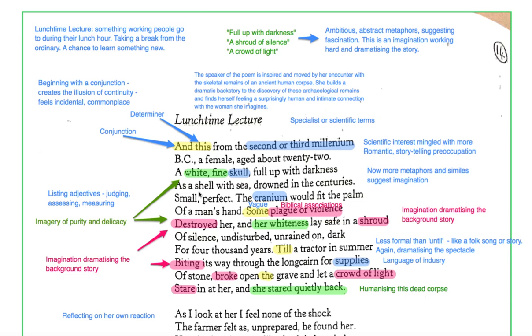Small, perfect, just the kind of those listed adjectives there, suggestive of somebody judging, assessing, measuring, making sense of something. They're not coordinated with an and. It's almost as if these are just thoughts that are occurring to her one by one. The cranium, there's another technical word there. So still, although this is an imaginative experience for her, it's still a technical and scientific experience as well. The cranium would fit the palm of a man's hand.